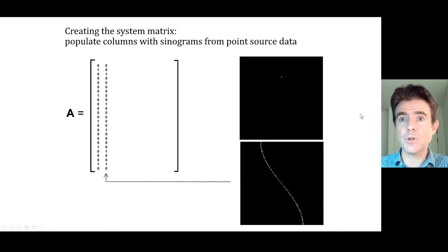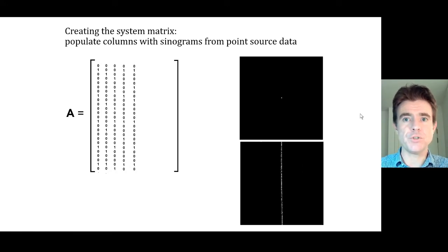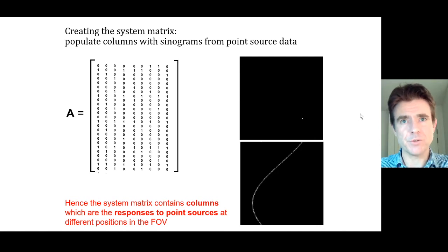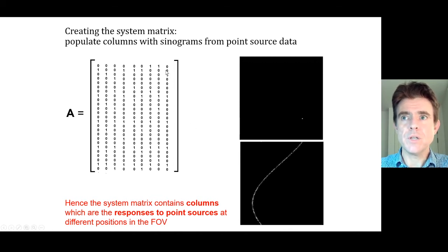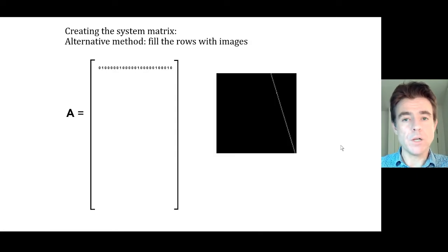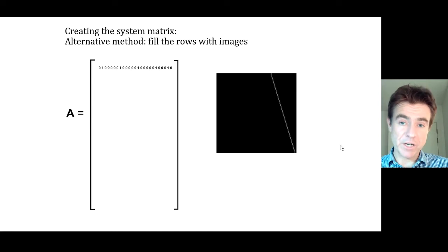We can do this for lots of different point sources at different positions inside the scanner field of view. We're just visiting different elements of the input parameter vector that represents the object — the reconstructed image, if you like — and for each one we need a column of the system matrix that models the mean response to a point source in that location. Hence the system matrix contains columns which are the responses to point sources at different positions in the scanner field of view.